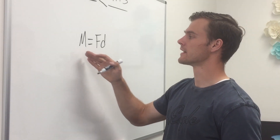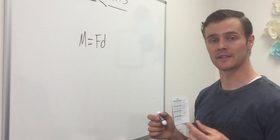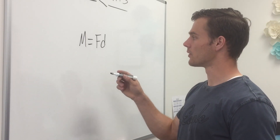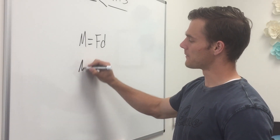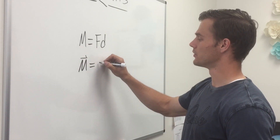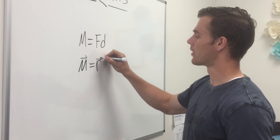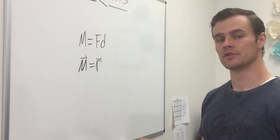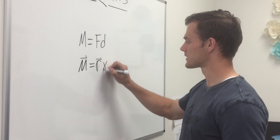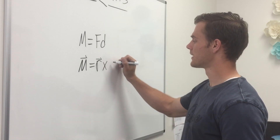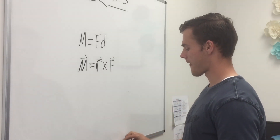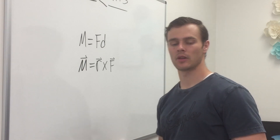But this just gives us the magnitude of the moment, because a moment is actually a vector — it has a direction. So we can write the moment in vector form: that equals our moment arm vector crossed with our force vector. So it captures how long the moment arm is and the direction it's going, crossed with how hard the force is pushing and the direction that force is being applied.